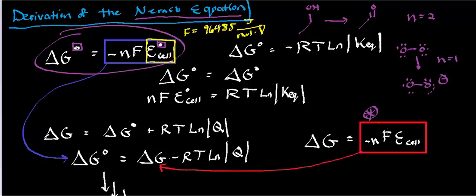If you want to calculate the cell potential when you're not at equilibrium, you have to use another form of the Nernst equation. We're going to derive that in this video. We start with two definitions of delta G at equilibrium: the Nernst form, which is negative NFE cell at equilibrium, and the form from a previous video, which is delta G° equals negative RT times the natural log of the equilibrium constant. Equating these two gives us an important relationship.